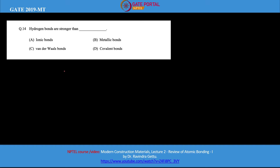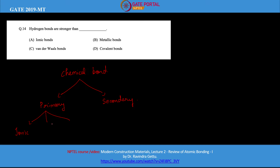Before getting into the answer, we will start with chemical bonding. Chemical bonds are generally classified into two sections: primary bonds and secondary bonds. The primary bonds are further classified into three types — ionic bond, covalent bond, and metallic bond.